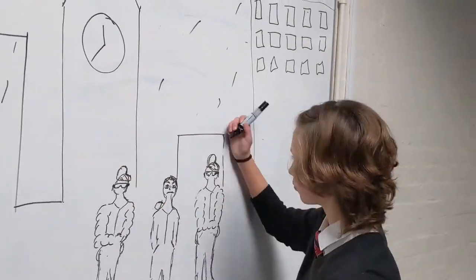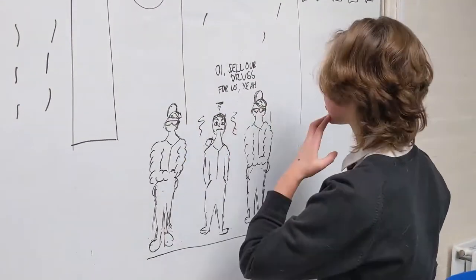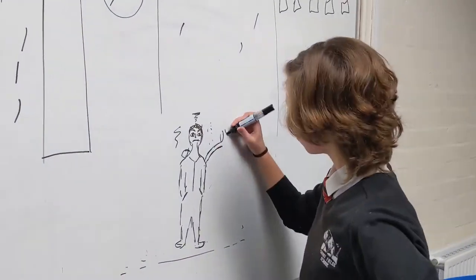Sometimes the dealers steal the drugs off them. That means they have a debt to work off. This makes them have to repetitively work for them. This is why it's so hard to get out of the system.